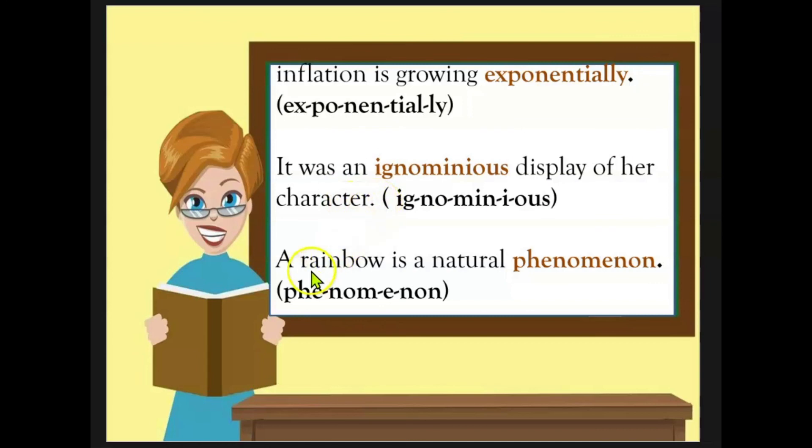The third sentence reads, A rainbow is a natural phenomenon. So we just break each word down into smaller parts that we are able to call at our own pace. And once we've done that, we knit the parts together. A rainbow is a natural phenomenon, phenomenon.